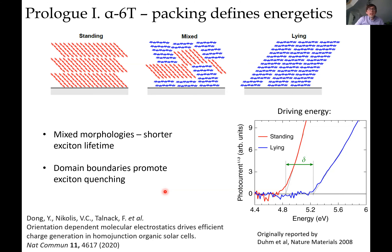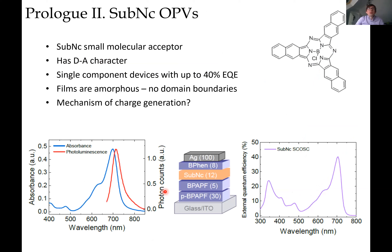This is one example of a system where there should be no driving force but actually works. In another, perhaps even more mysterious case, we looked at SubNC molecules. This molecule and its derivatives are quite popular for photovoltaics. If you make a device of this material, you can also get external quantum efficiencies up to 40%. However, the domain-boundary argument from alpha-6T can't work here because films of this material are amorphous — there are no domains and no domain boundaries.